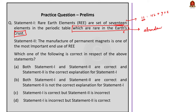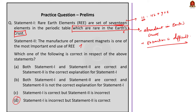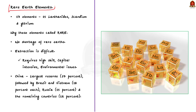The reason REE are called 'rare' is because their extraction is very difficult, requiring high skill, capital investment and addressing environmental issues. Statement two — the manufacture of permanent magnets is one of the most important end uses of REE — is correct. So statement one is incorrect and statement two alone is correct, making the correct option D. China has the largest reserve at 37%, followed by Brazil and Vietnam at 18% each, and Russia at 15%.